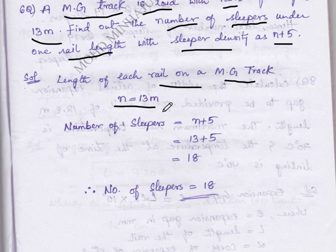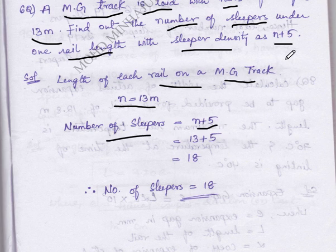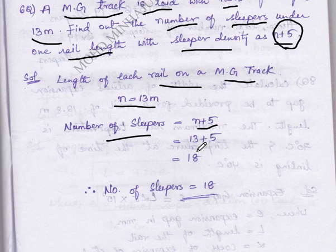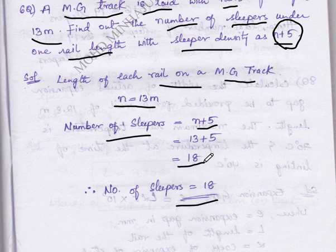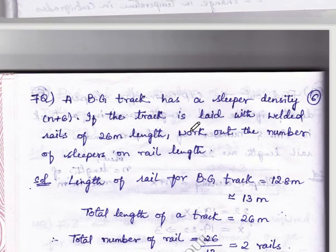For meter gauge you always take 13 meters. Therefore number of sleepers is calculated by the formula given in the question as n plus 5, so 13 plus 5 equals 18. Therefore the number of sleepers is 18.